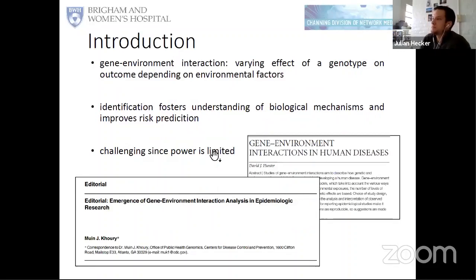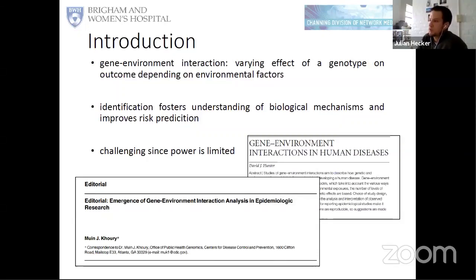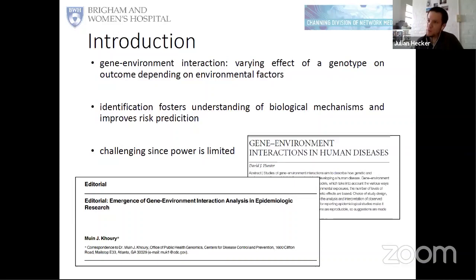As an introduction, for most complex diseases and traits there's a genetic component and an environmental component, but there's potentially also an interplay between the genetic factors and the environmental factors. Gene-environment interaction can be roughly defined as a varying effect of a genotype on an outcome that depends on environmental factors — basically that the effect of the genotype is not the same for all individuals because it depends on the environment. The identification of such gene-environment interactions could improve the understanding of biological mechanisms and also improve risk prediction, including for polygenic risk scores.